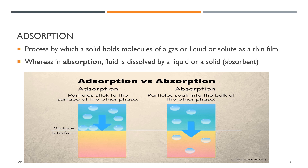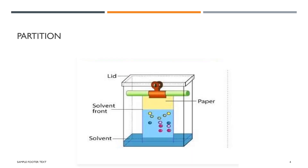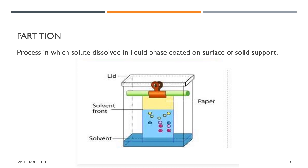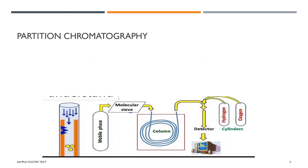In absorption, a fluid is dissolved by a liquid or a solid absorbent. Partition is the process in which a solute is dissolved in the liquid phase coated on the surface of a solid support. Keep that in mind — in partition chromatography, a solid support is required, for example in thin layer chromatography.